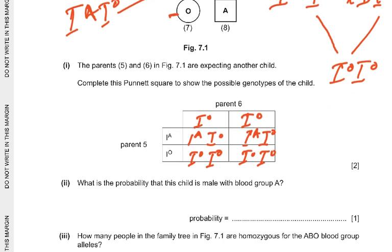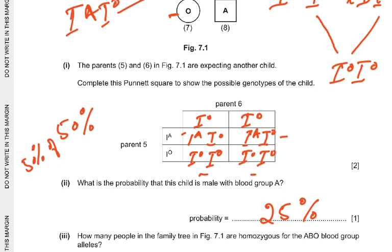What is the probability this child is male with blood group A? Having blood group A is 50 percent — out of four children, two are O group and two are A group. Having a male child is also 50 percent. So it is 50 percent of 50 percent, which is 25 percent.